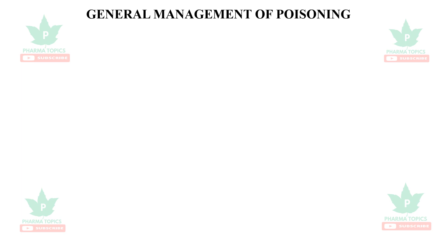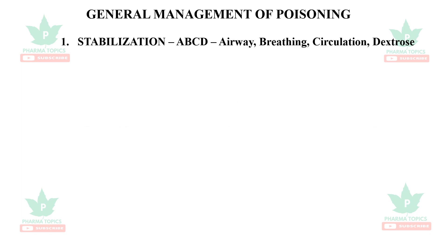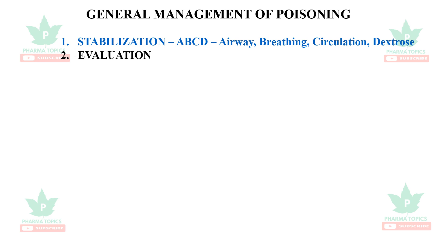General Management of Poisoning. Let's talk about what we need — 6 steps: A, B, C, D — Airway, Breathing, Circulation, Dextrose. Dextrose, and Evaluation.